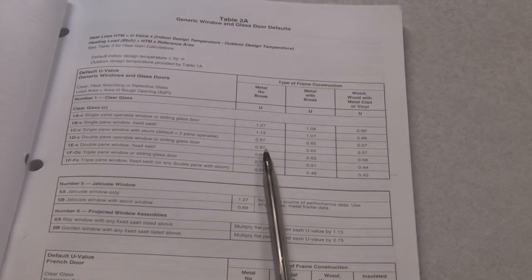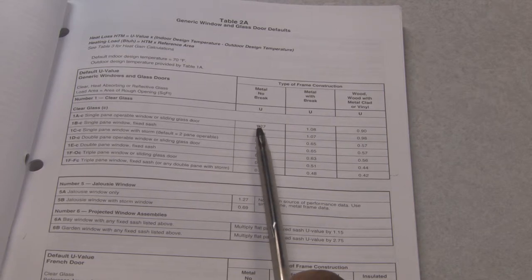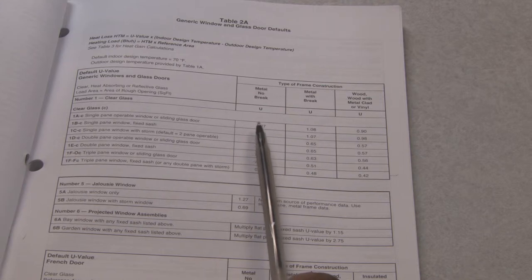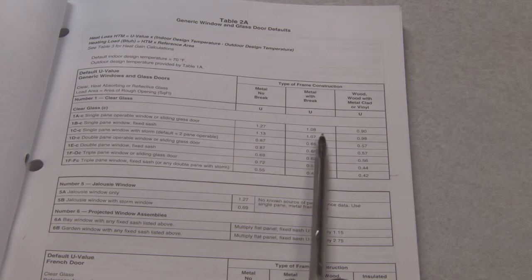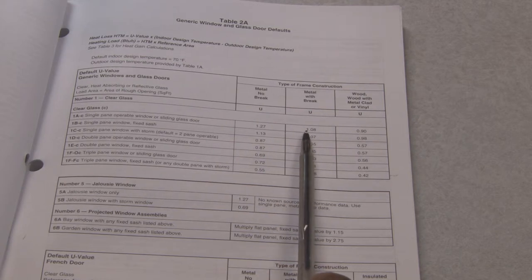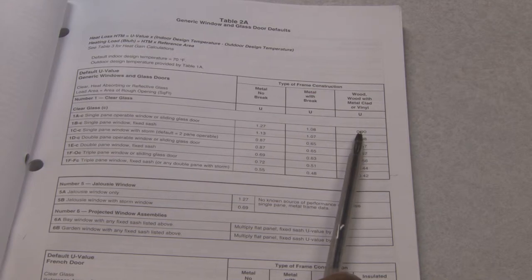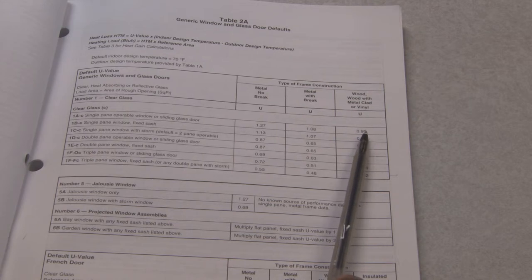U factors is the conductivity of the window. So if we look at this, this is saying for every square foot of that door, we have a heat loss factor of 1.27 per square foot. 1.27 for a metal with no break. A metal with a break would be 1.08. But if it's a vinyl window, it actually loses less or gain less heat. Because it's a little more efficient. And it's 0.90.